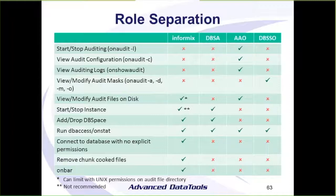In terms of access, the Informix user can get to any database, but the DBSSA can only access databases where they've been granted access, which is more secure. Also, the DBSSA can't start messing around with the raw chunk files. Enabling role separation makes your system more secure in terms of access, while limiting the Informix user's role to things where it's really needed — like upgrades and adding chunks.